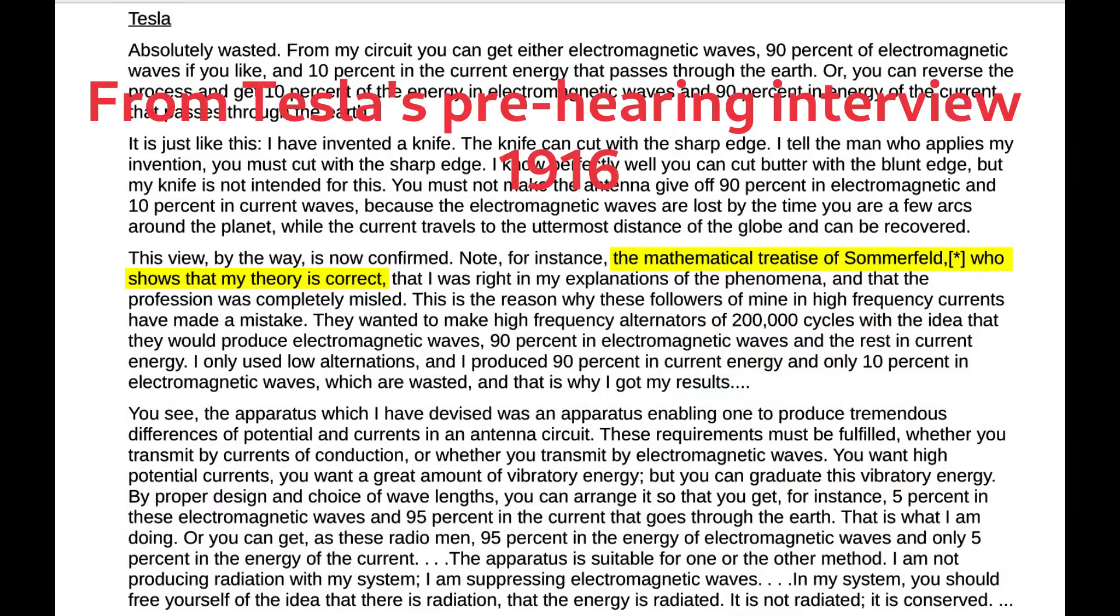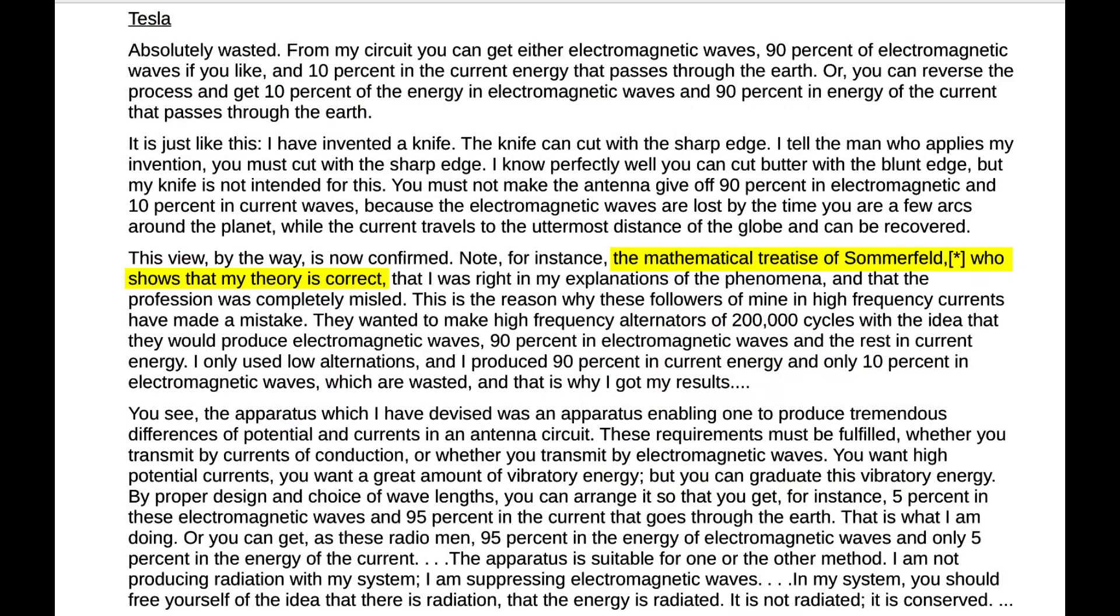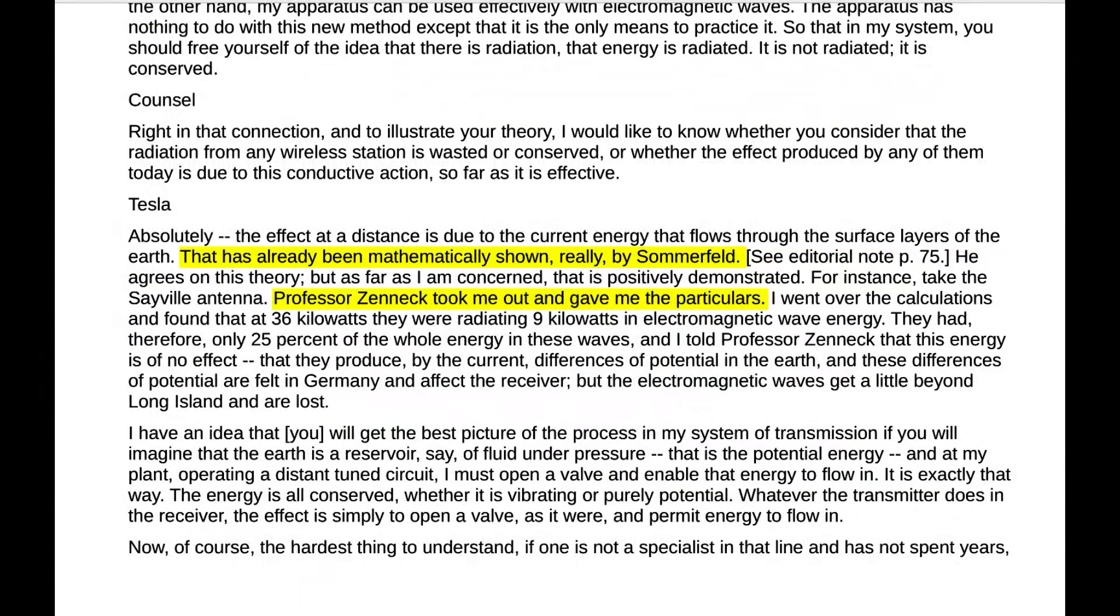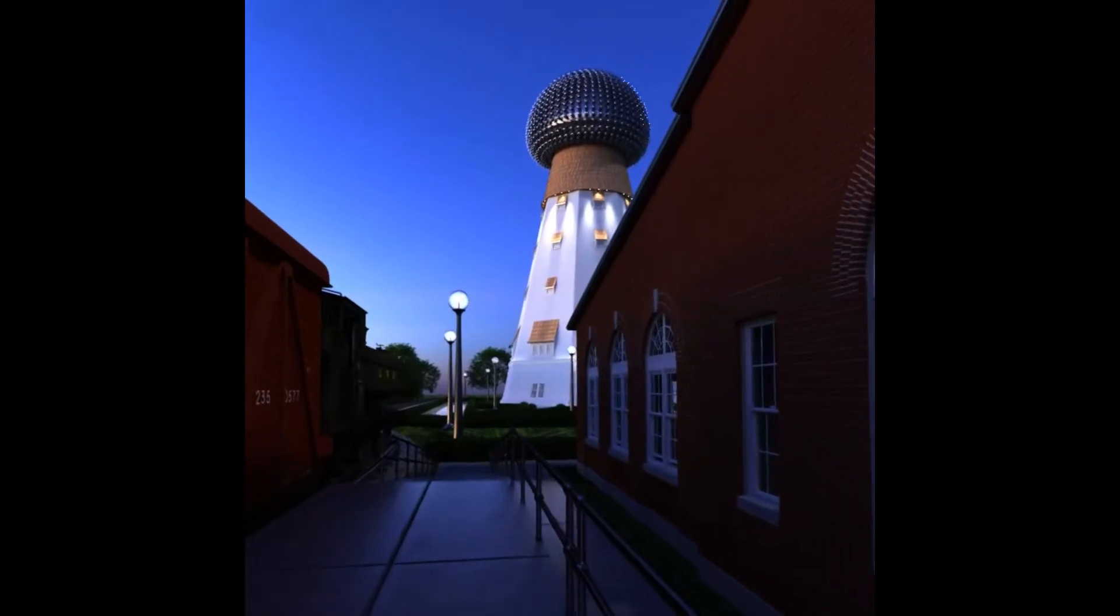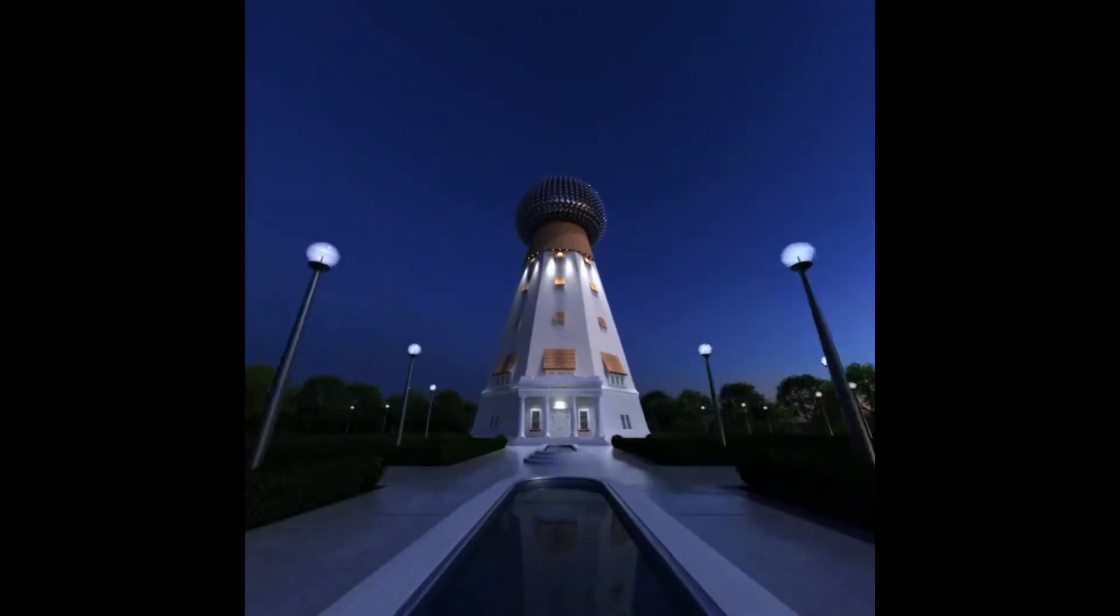Now, it is true that Tesla refers to Sommerfeld and Zenneck in defense of his system, but in my opinion, he does so only to show that there are ways to accomplish worldwide wireless power transmission, but Tesla's way differs on some points from what they describe. Then, how did Tesla envision that his system would work?